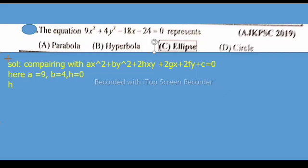Now, h² - AB. Value of h is 0, A is 9 and B is 4. So 0 - (9)(4) = -36, which is less than 0.